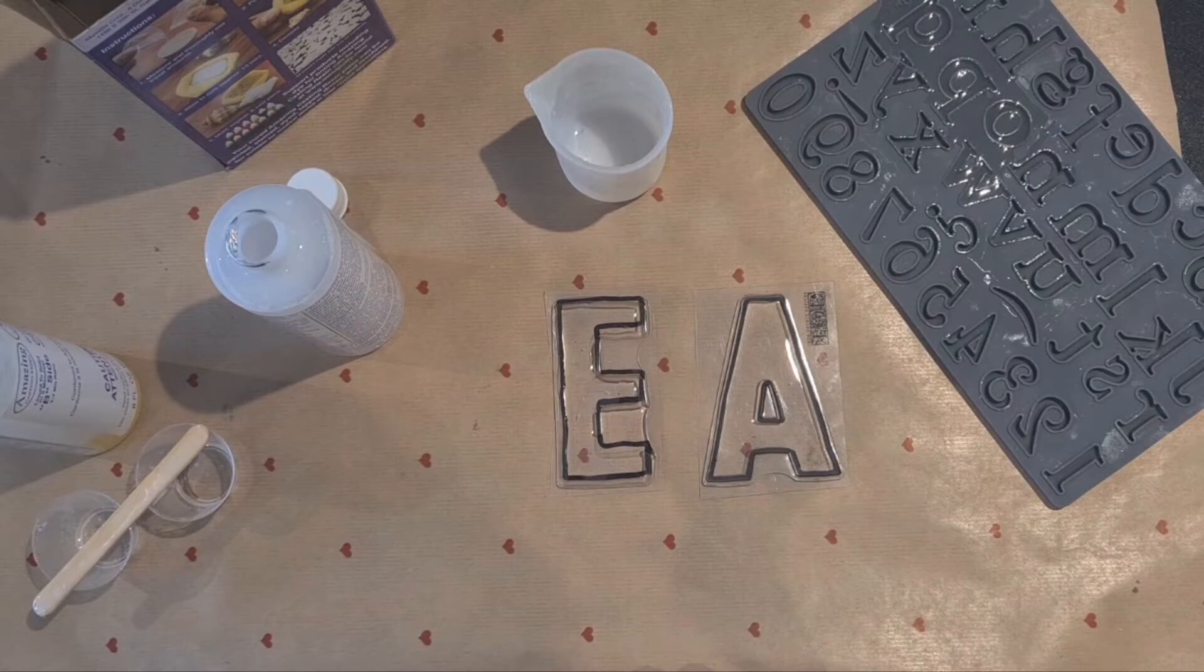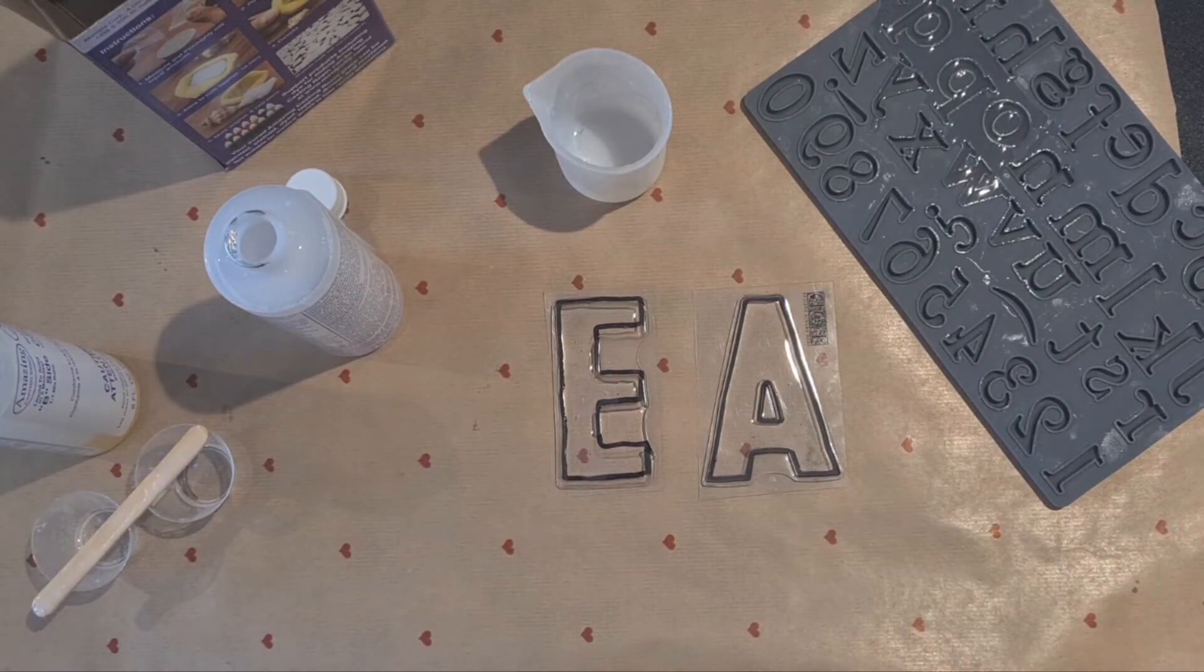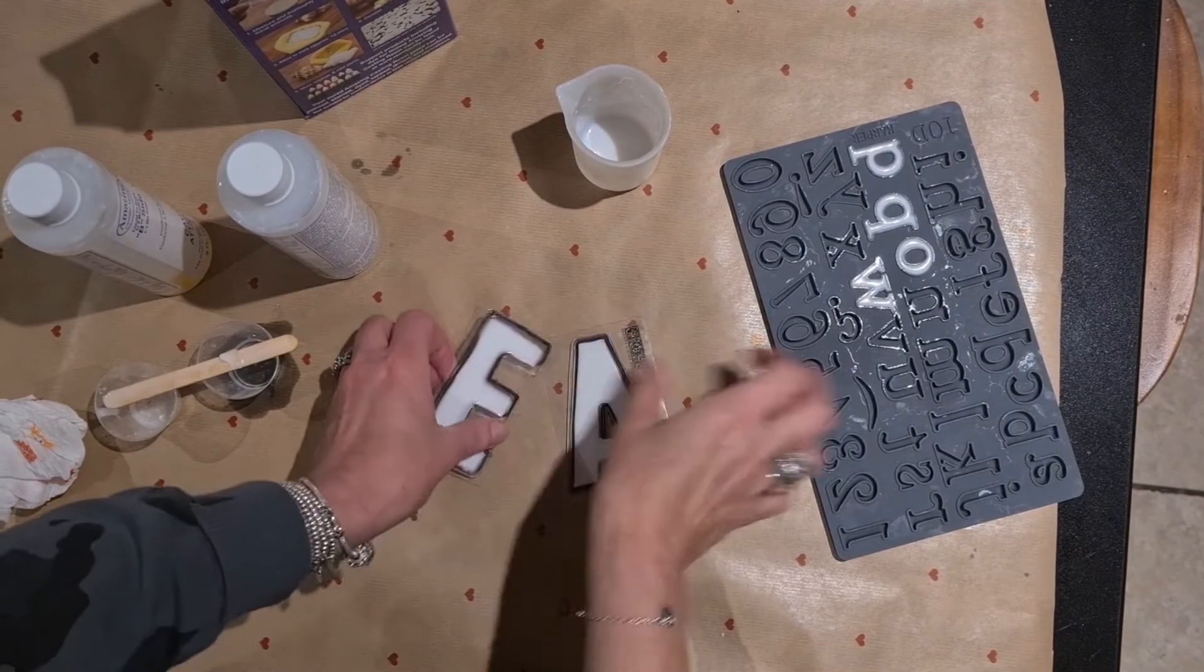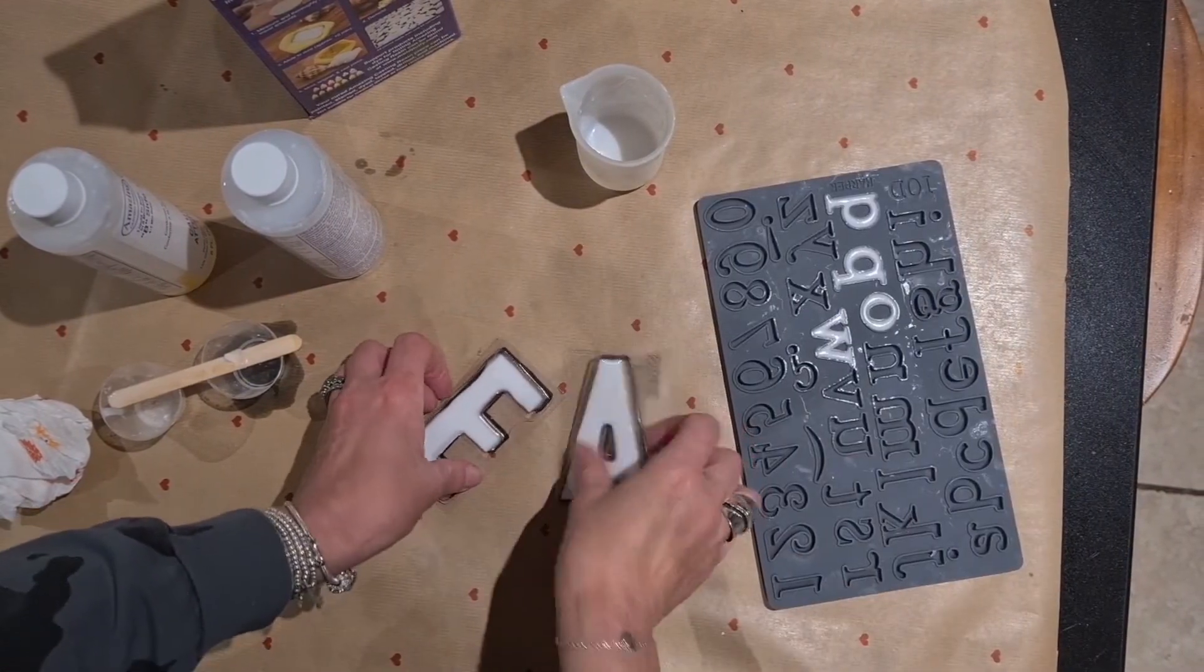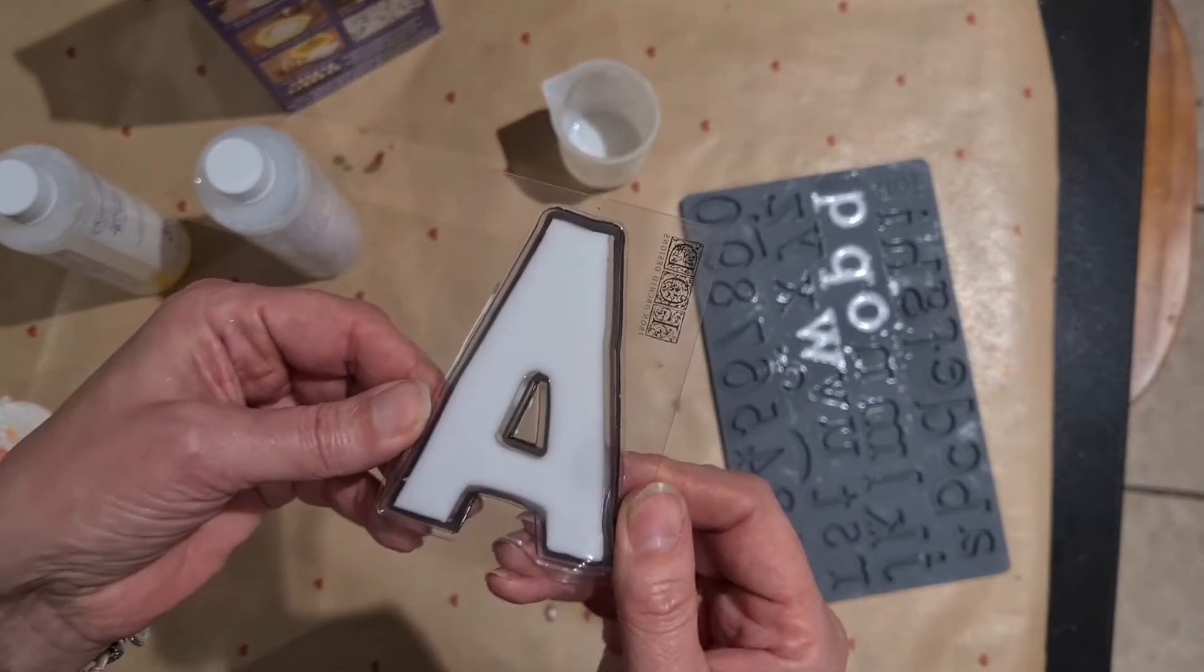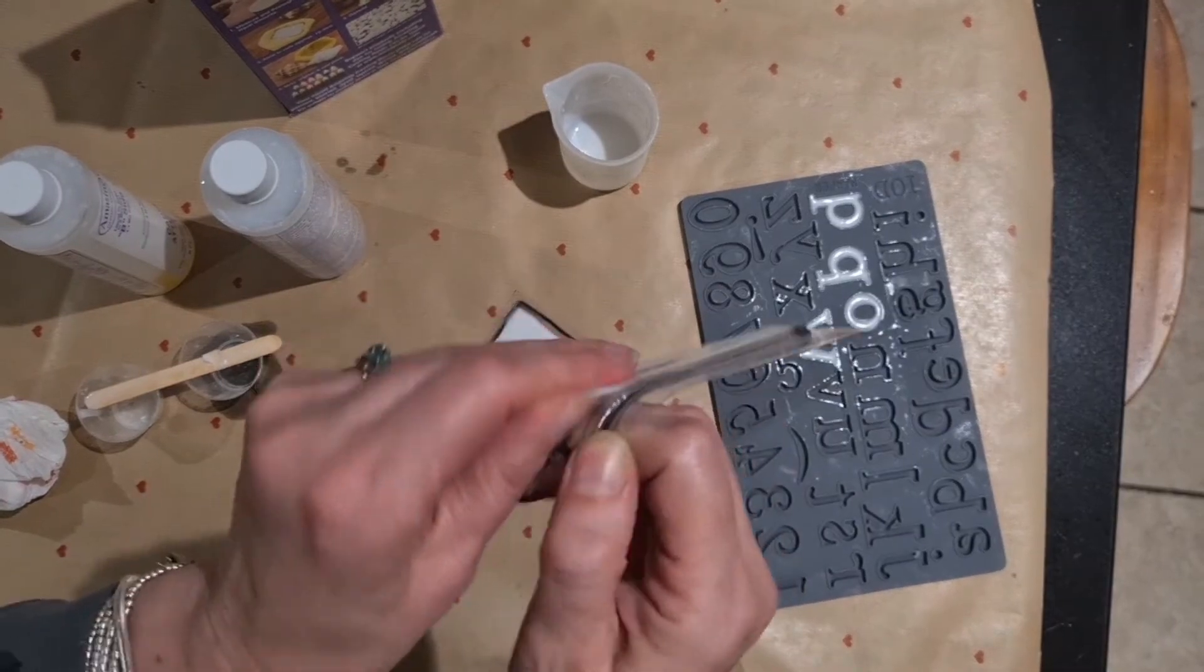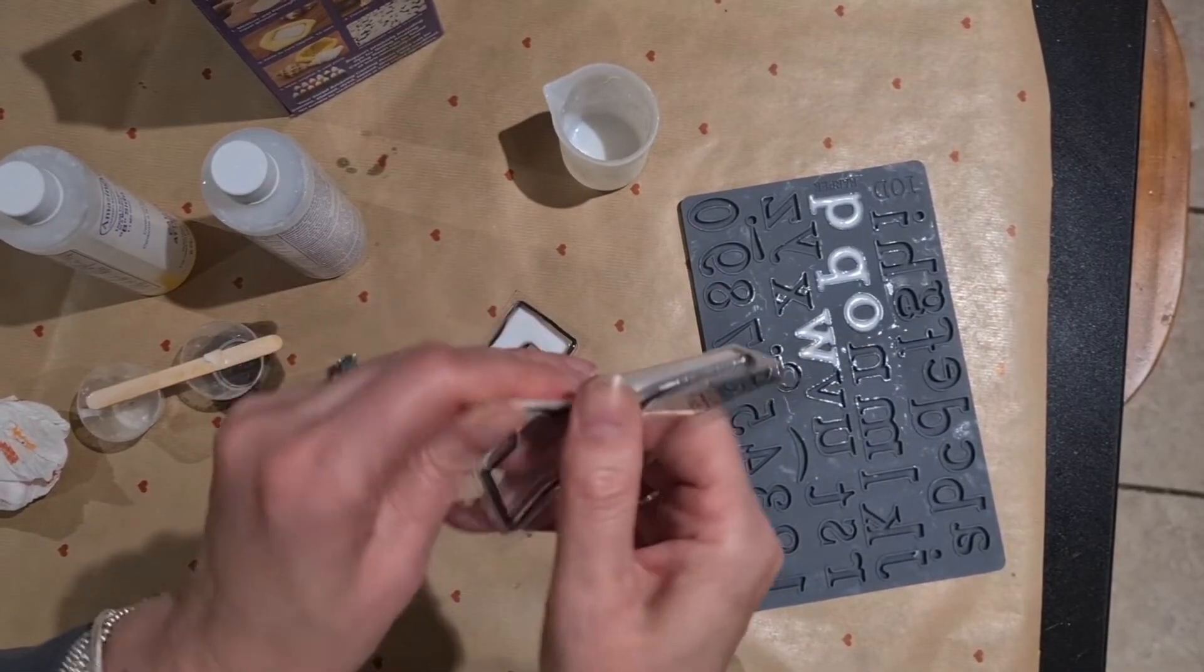Just squish it all out and spread it and then when that sets it will easily come out and then all of this extra resin around the end you just peel away. Okay, so we're going to let those set and then we'll come back and see how we get on. Okay, so these have now completely set so I'm going to try and remove them from the stamp.